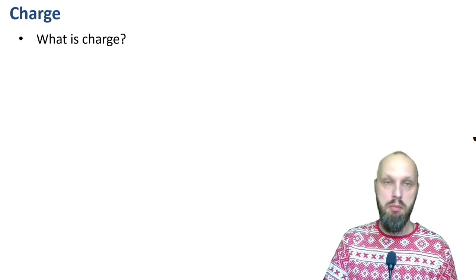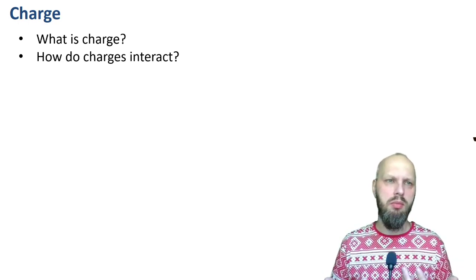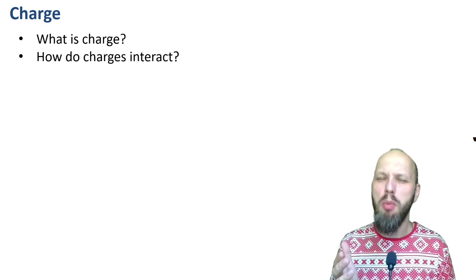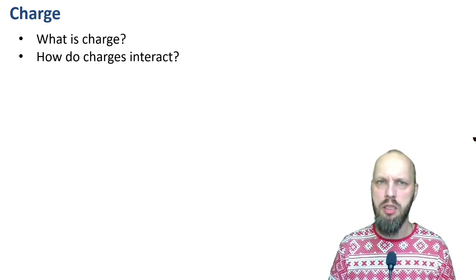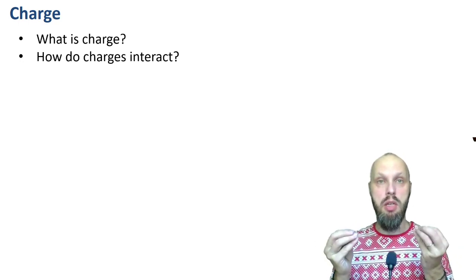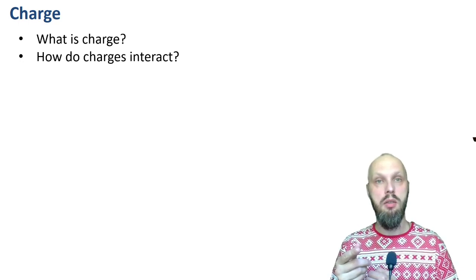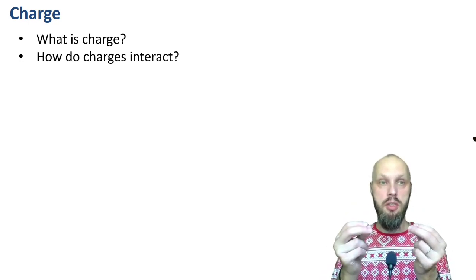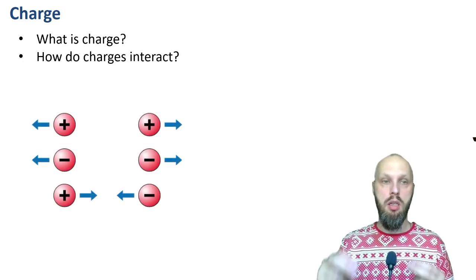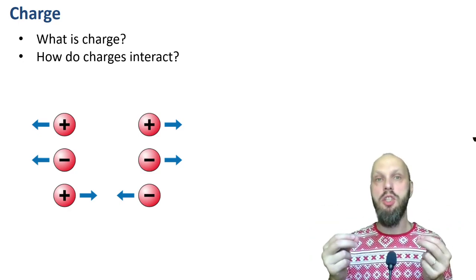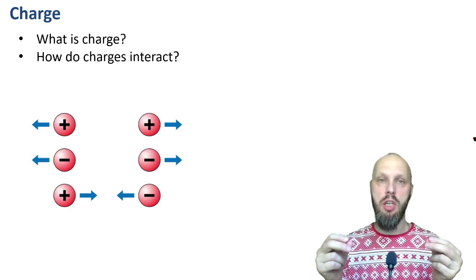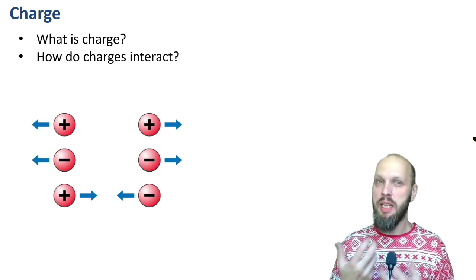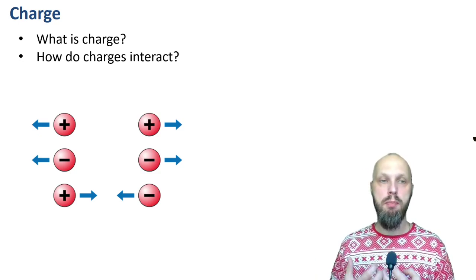How do charges interact? Charges that are the same — two positive charges — repel each other. Two negative charges also repel. But a positive charge and a negative charge attract each other. Charges are a property of matter, kind of like mass, but unlike mass they are positive and negative — they come in two varieties.